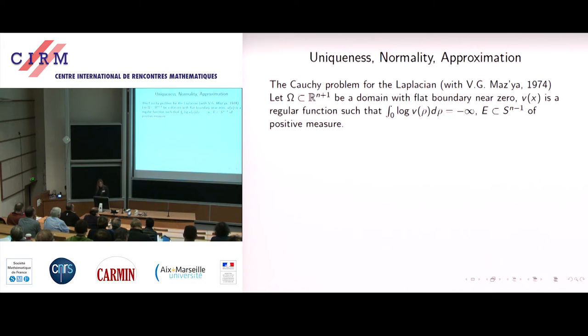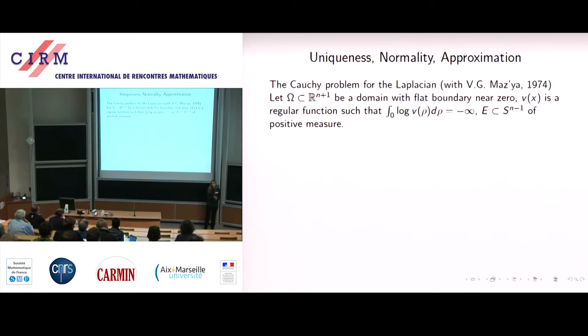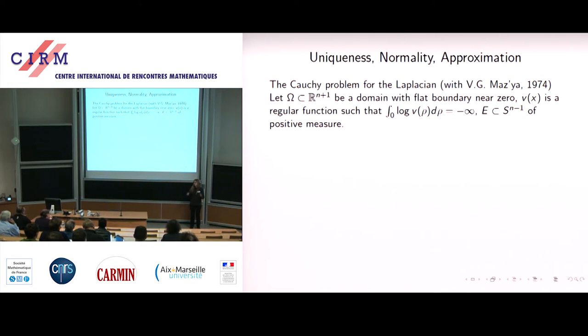One thing that I want to talk a bit more about, it's his works with Mazia on approximation. And the thing that Viktor Petrovich always repeated, if you want to study approximation, you want to look at the whole triple, approximation, uniqueness and normality. You don't do approximation over there. You think always about the dual problem, you think about uniqueness, you think about normal families.